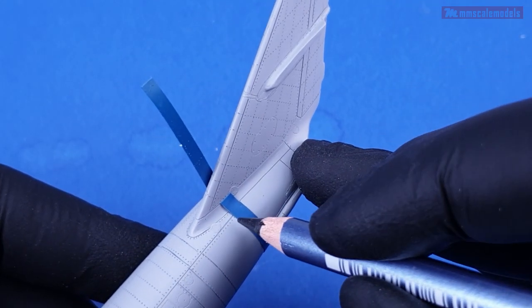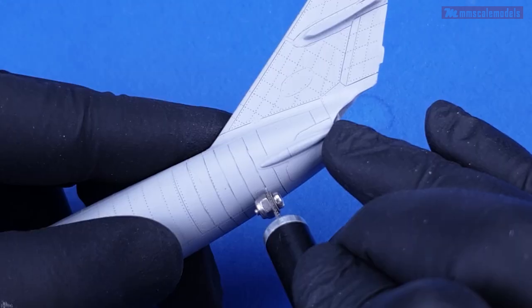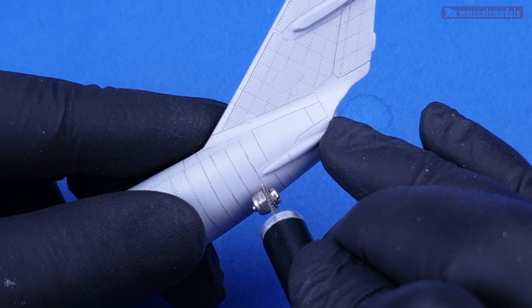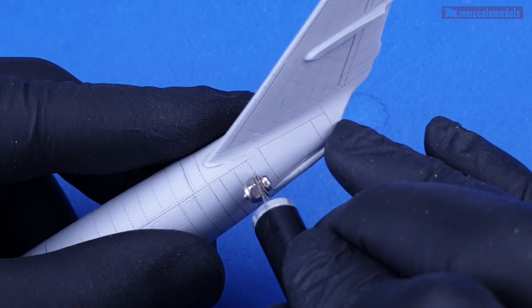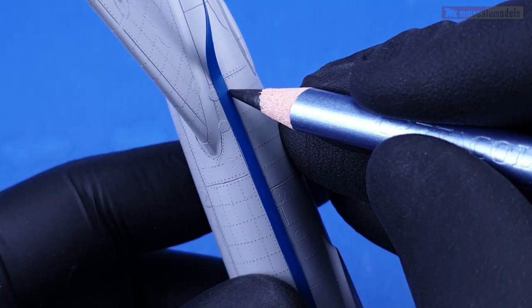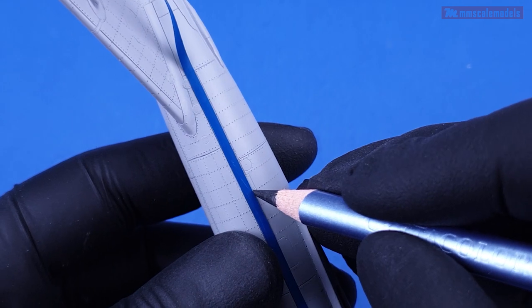Some kits don't get all the panel lines correct as well. So this can throw you off in the wrong direction. To draw the rivet lines I use a wide vinyl tape wherever possible. The wider the tape the less of a chance it has to bend and curve a line that should be straight.